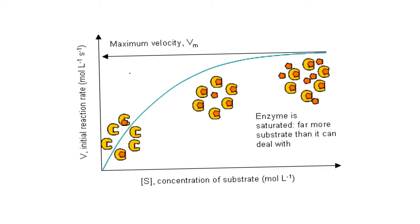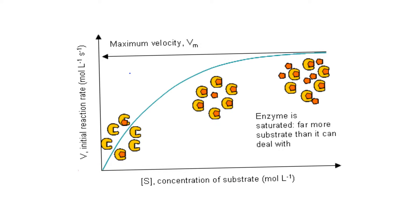Let's look at the graph. The x-axis is substrate concentration given in moles per liter, and the y-axis is V1, the initial velocity of the reaction, given in moles per liter per second. We need to consider a constant amount of enzyme at any given point in time. As you can see, there are six enzymes in this figure, each with an active site — so six active sites total.